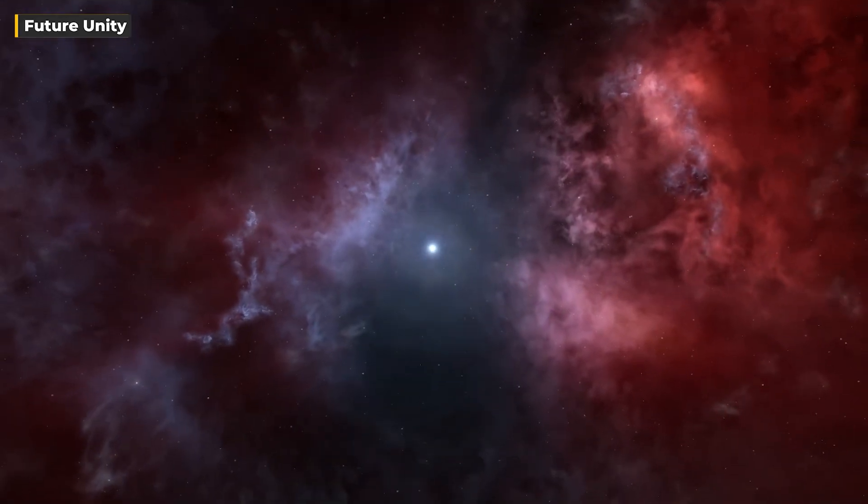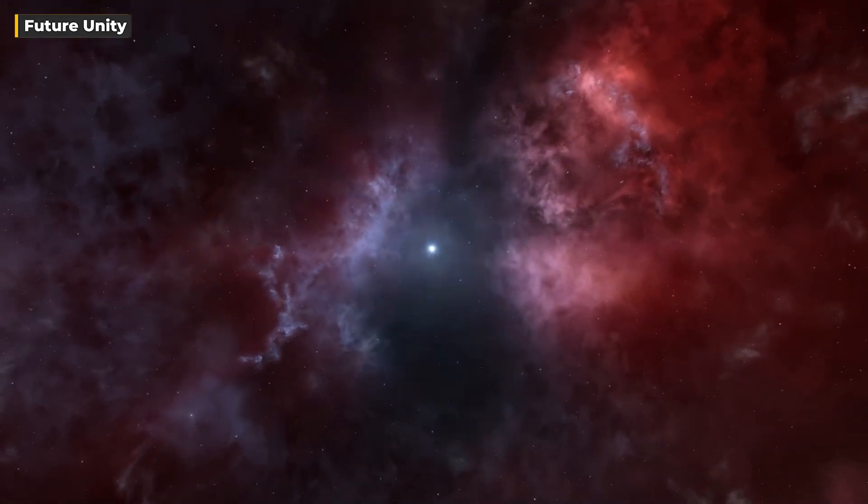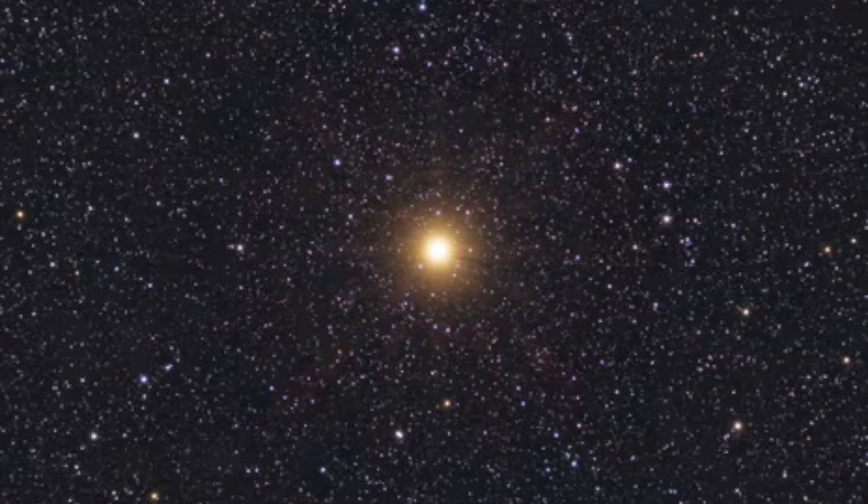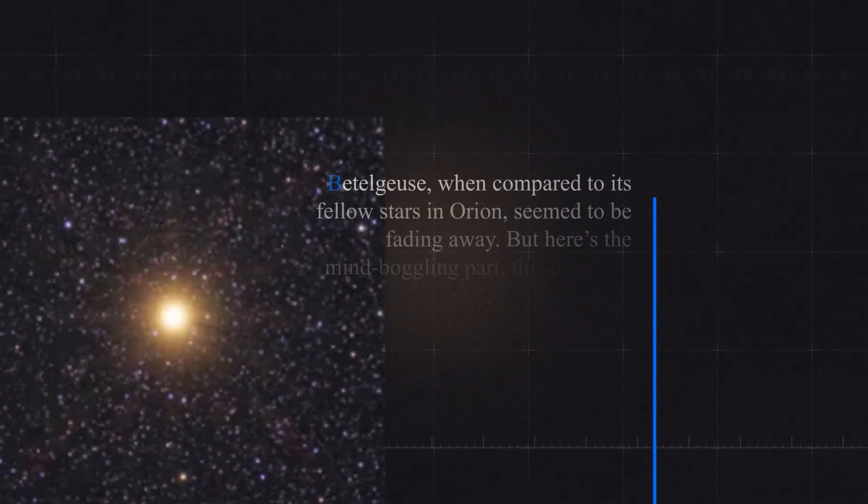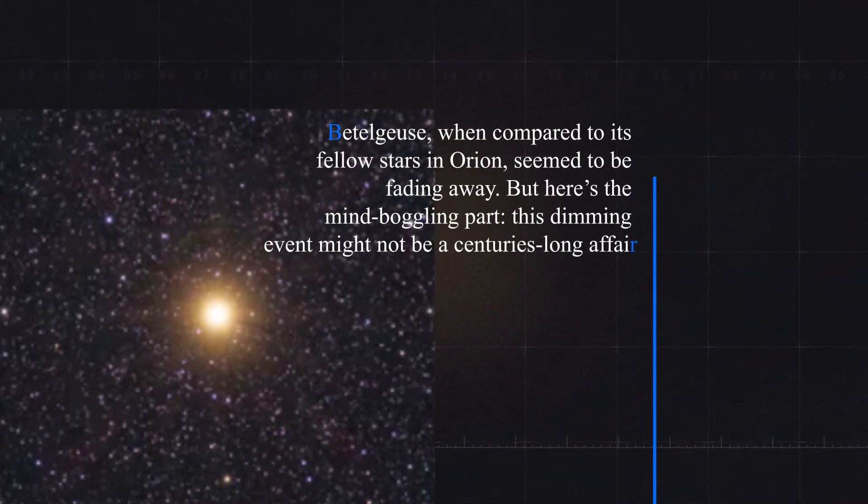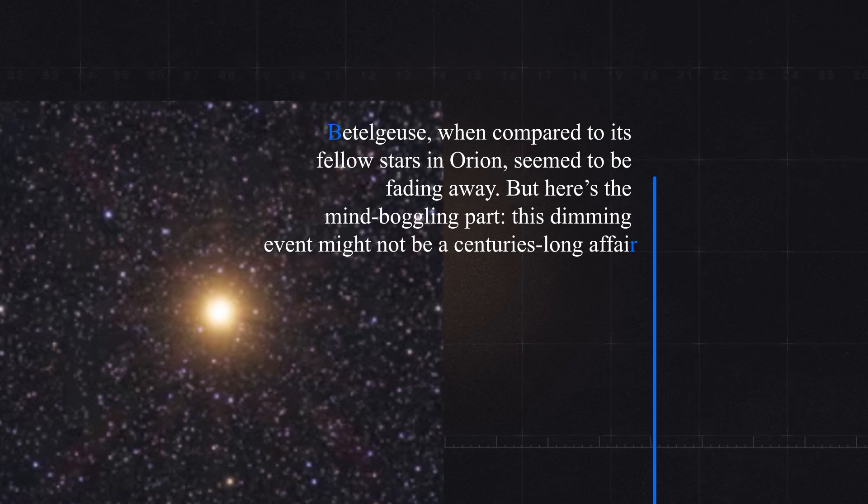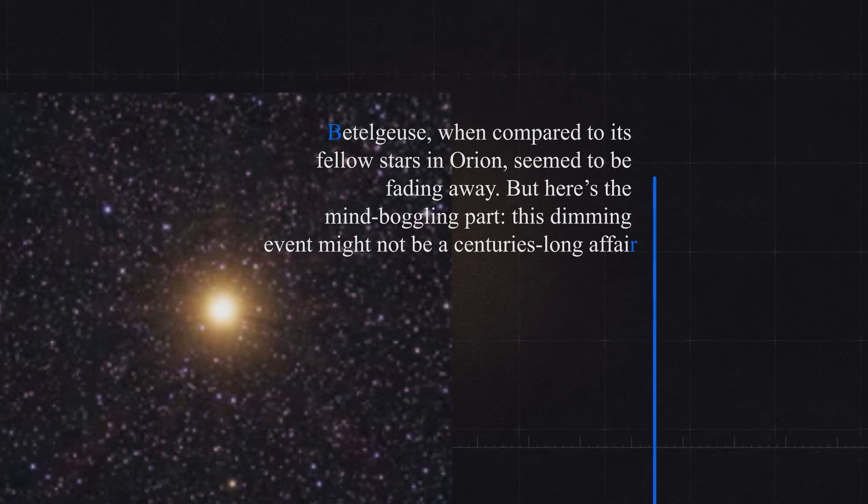This change was so dramatic that even those who casually gaze at the stars noticed something unusual. Betelgeuse, when compared to its fellow stars in Orion, seemed to be fading away. But here's the mind-boggling part, this dimming event might not be a centuries-long affair.